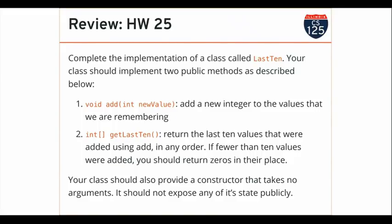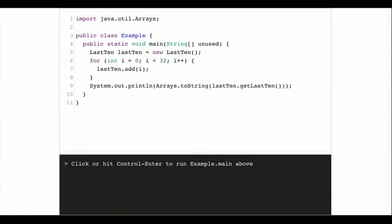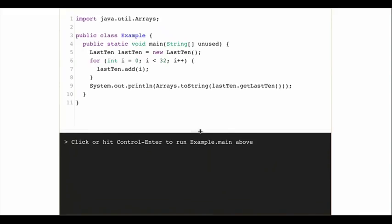Here's my main method. I'm going to create a new instance of Last10, run a loop where I add some integers to it — roughly what the test did, a little bit trickier. I'm using a helper class with an import to print the result. Right now this won't compile because I haven't defined Last10. So we're going to create a class called Last10.